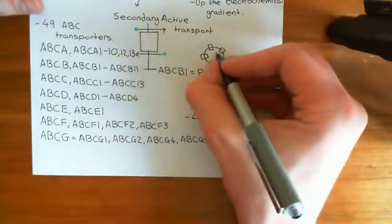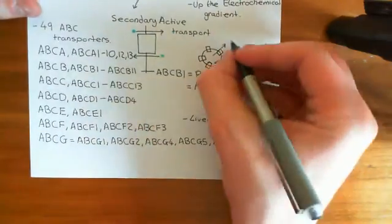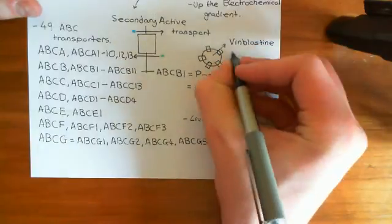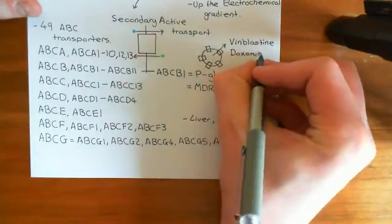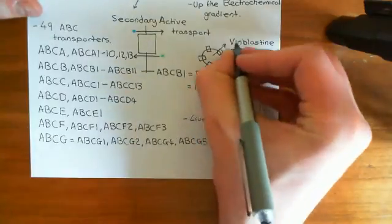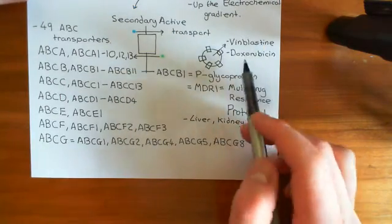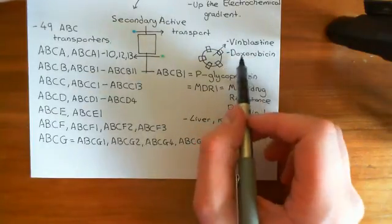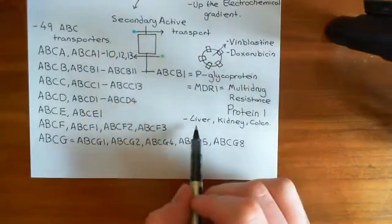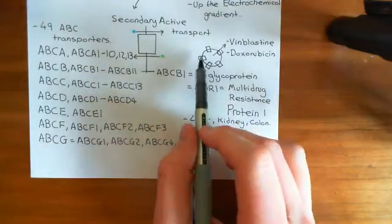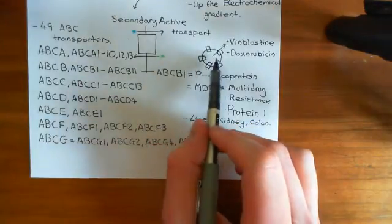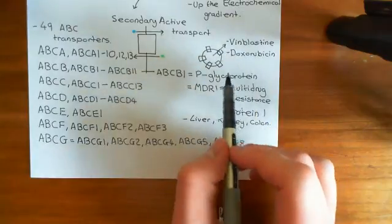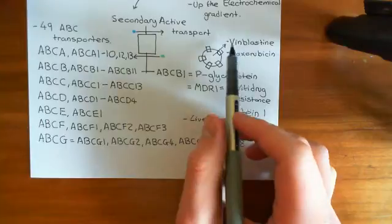What drugs are thrown out of the cell by ABCB1? Examples include vinblastine, which is an anti-mitotic drug, and doxorubicin, which is an intercalator. These are very powerful anti-cancer drugs — doxorubicin is a truly cytotoxic drug — but if your liver, kidney, or colon cancer cell has overexpression of ABCB1, these transporters can throw the chemotherapy drugs out of the cell, protecting the cancer cell from the drug.